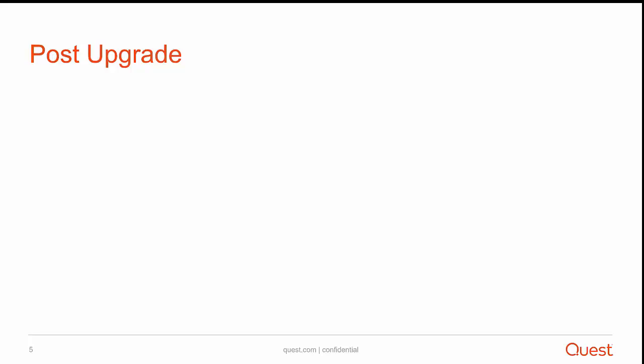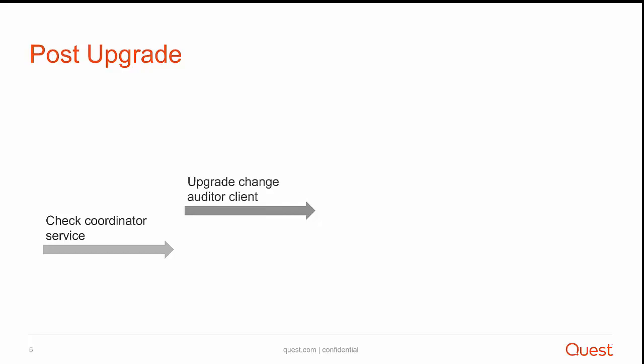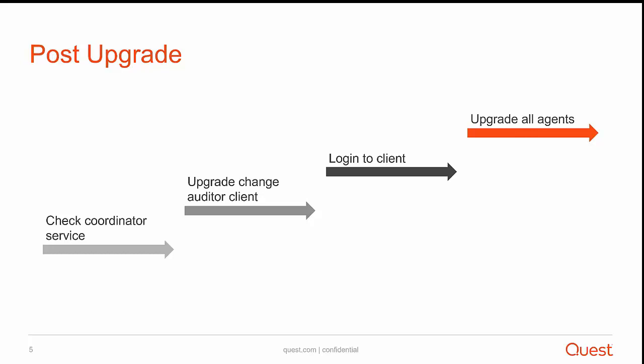Now let's go ahead and see the post-upgrade tasks. In a post-upgrade task, there are four things to do. First, make sure the coordinator service is in a running state after upgrade. If not, please start the Change Auditor coordinator service. Once the service is restarted, log in to your Change Auditor client — but it will give you an error because your coordinator has been upgraded to 7.1. To resolve this, upgrade your Change Auditor client to 7.1 as well. So the second step is to upgrade your Change Auditor client.